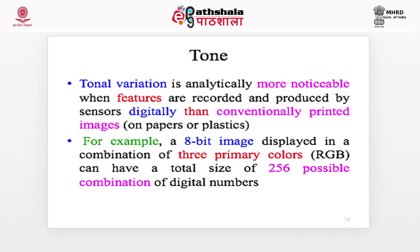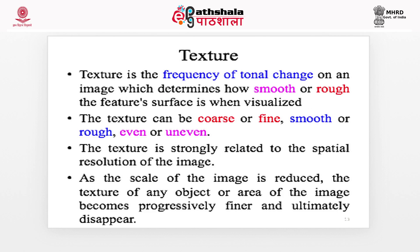For example, an 8-bit satellite image displayed in a combination of three primary colors — red, green, and blue — can have a total of 256 possible combinations of digital numbers ranging between 0 to 255.